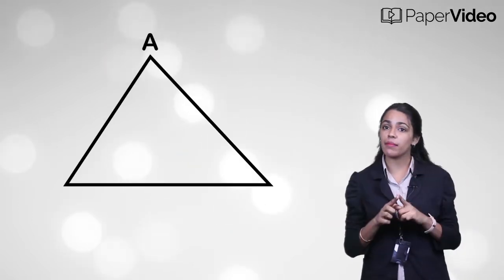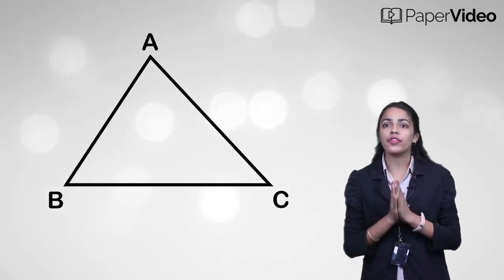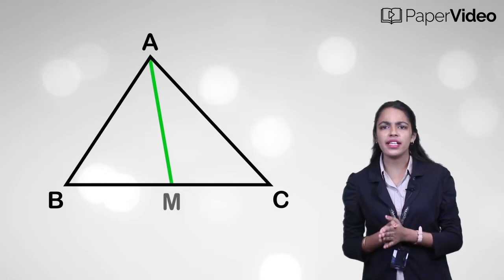To understand it, let's draw a triangle ABC like this. Now, let's draw a median AM from vertex A to side BC.